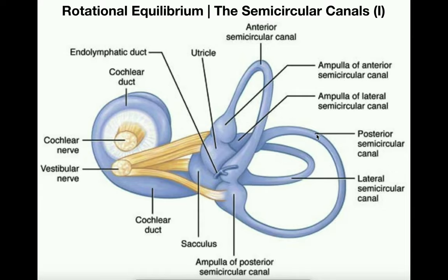The posterior semicircular canal is somewhat oblique — angular relative to the other two. As a result, it detects rotational movements in the frontal or coronal plane. To stimulate the posterior semicircular canal, you'd move your head such that your right ear touches your right shoulder and your left ear touches your left shoulder, back and forth — lateral neck flexion. That movement in the frontal plane activates the posterior semicircular canal.